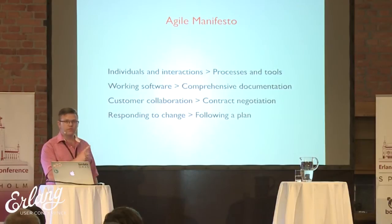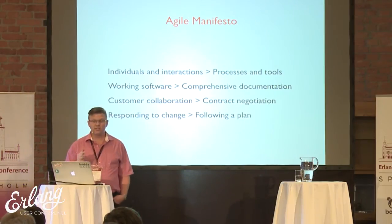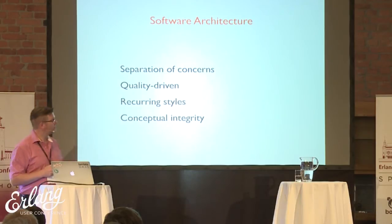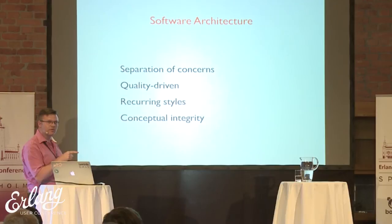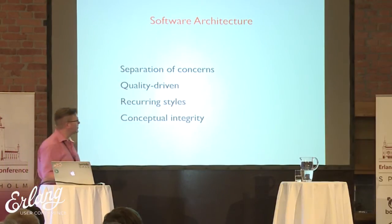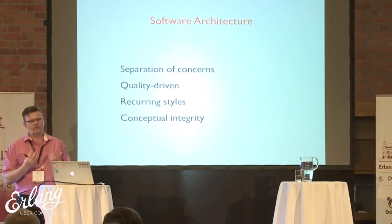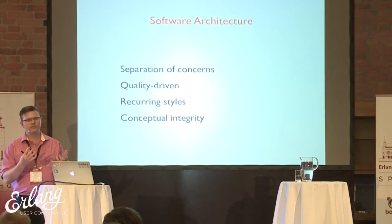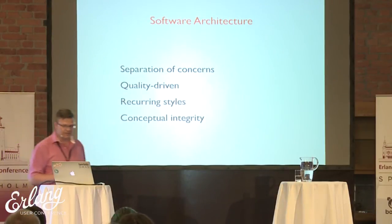One of the things you can do is — and now I'm going to say something some agile people will say is absolutely ludicrous — you actually need to pay attention to software architecture. That means you need some separation of concerns. Yes, I know, you have to think before you start doing something. It's quality driven. Then you have recurring styles — this is where we're talking about patterns, ways of doing things. And then conceptual integrity: somebody should carry the overall vision of the system through.